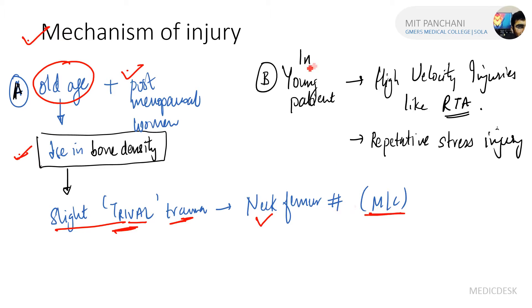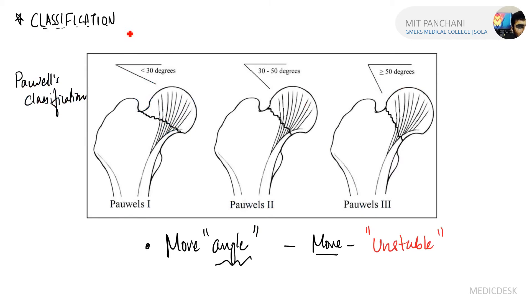It is the most common fracture seen in old age. In young patients, there are conditions like high velocity injuries like road traffic accidents or repetitive stress, and that can lead to fracture of the femur neck.